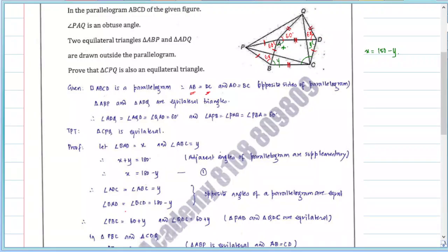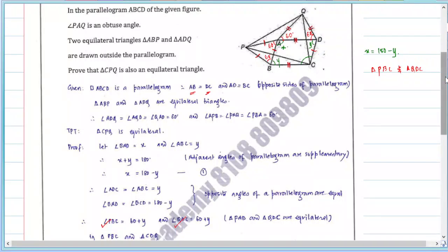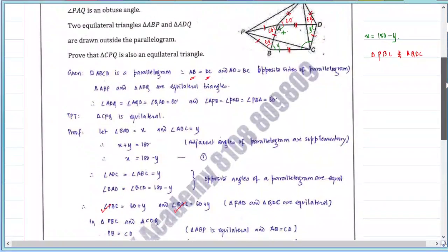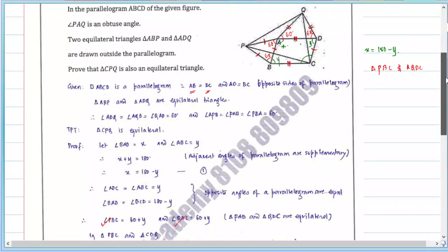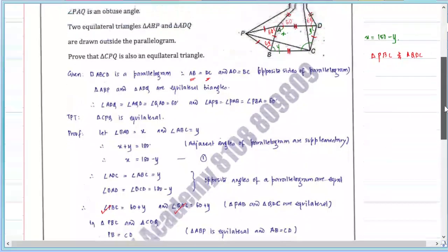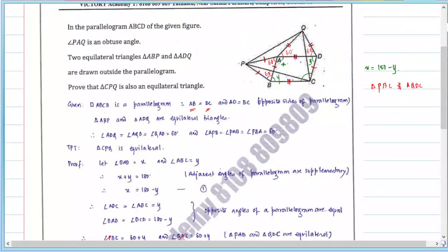So angle QDC equals 60 plus Y, and angle PBC equals 60 plus Y. Then we consider triangle PBC and triangle QDC. PB is equal to CD, and BC is equal to QD.